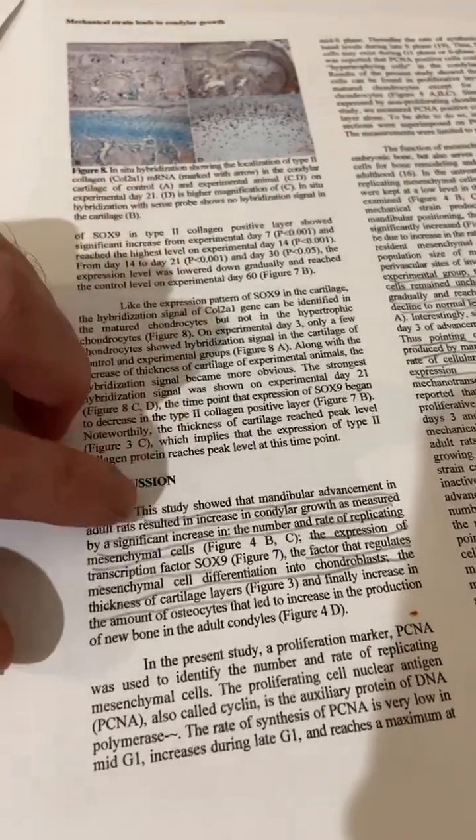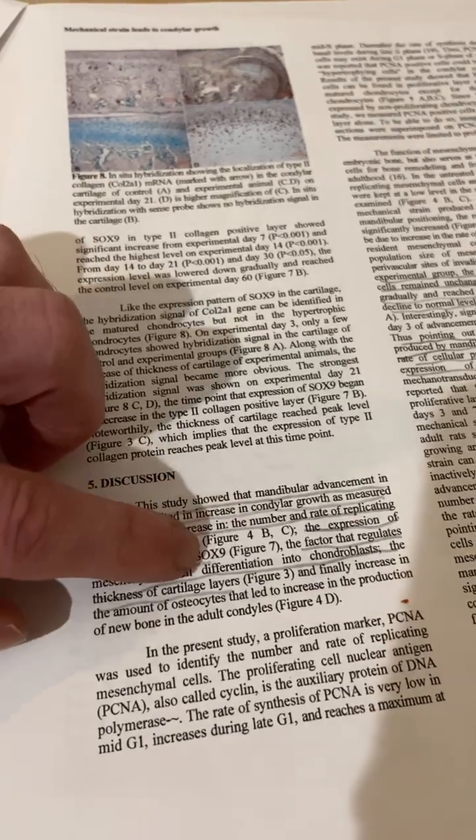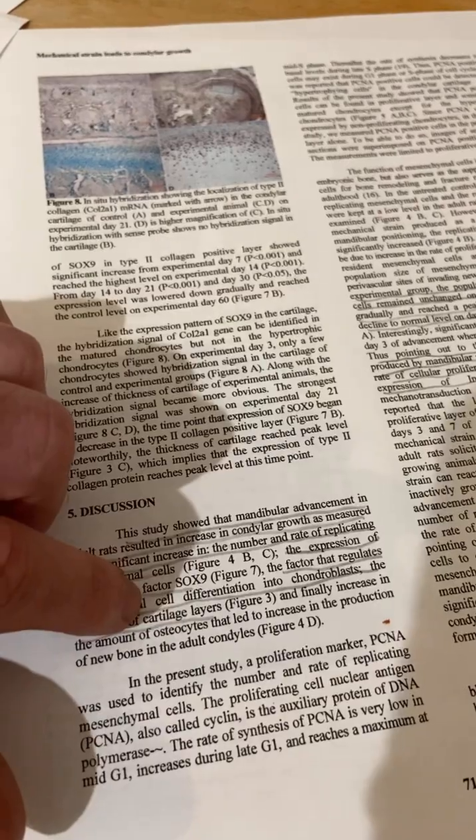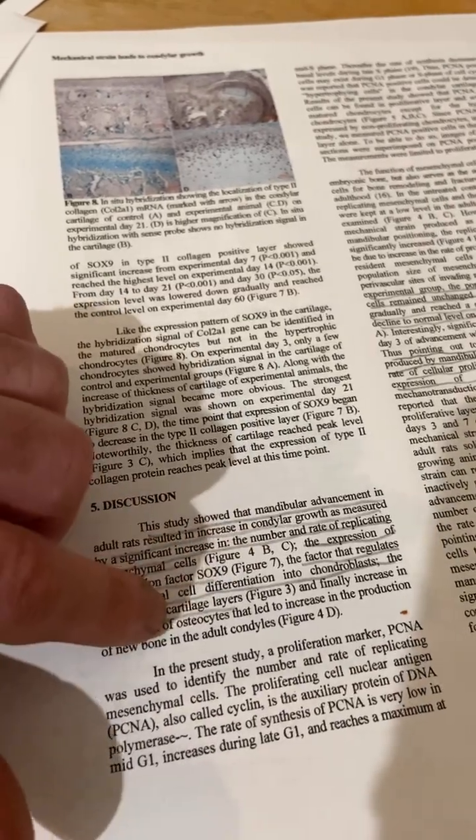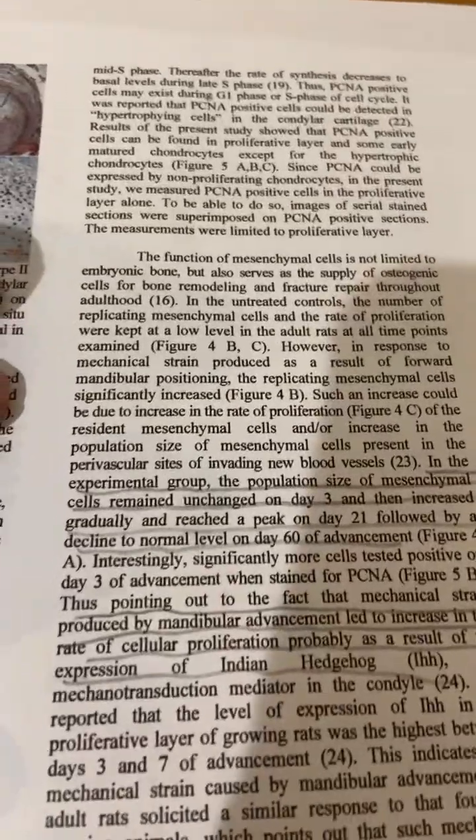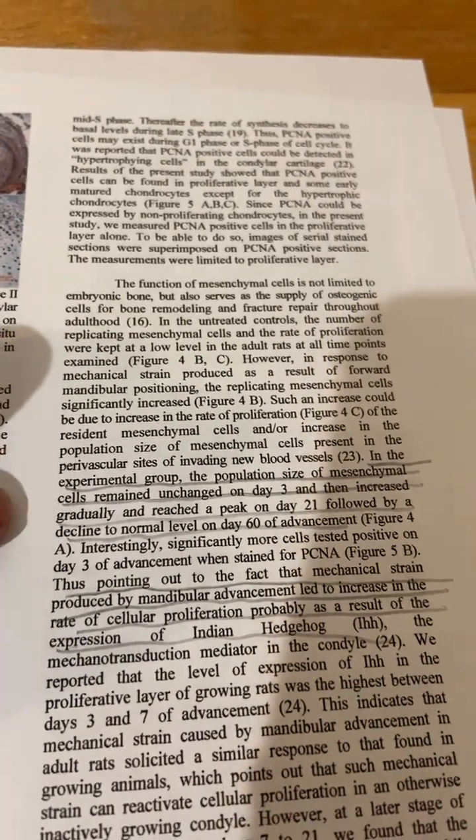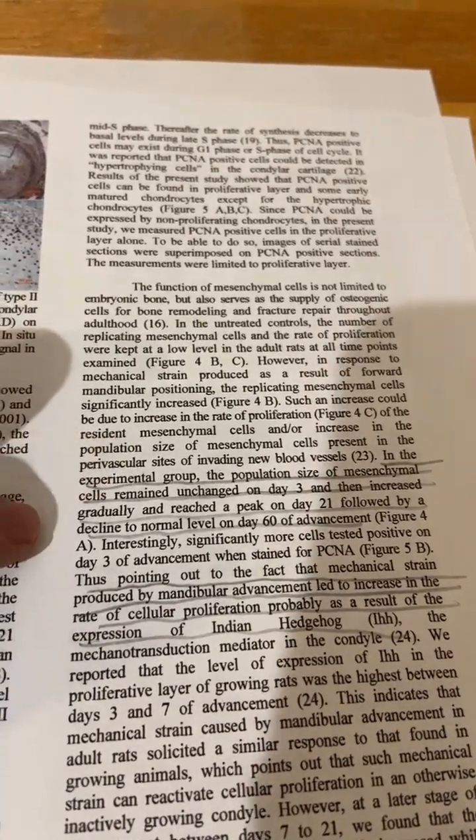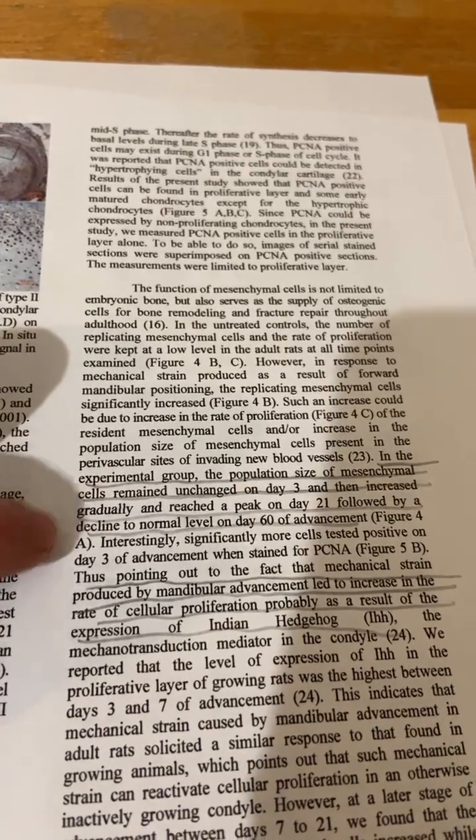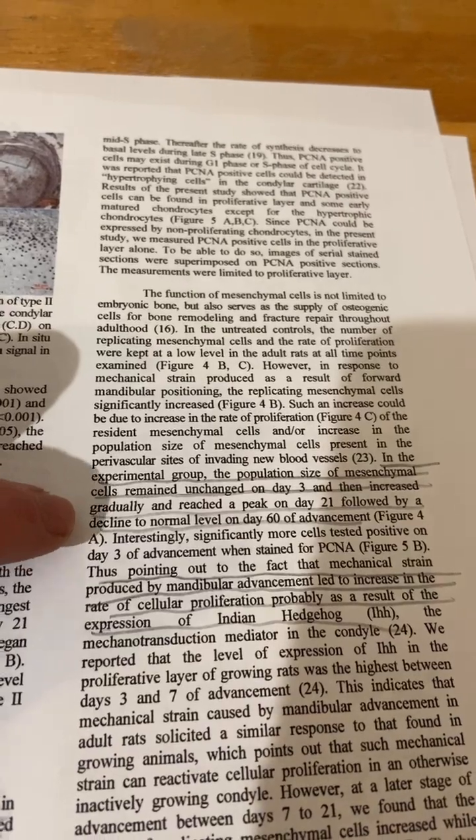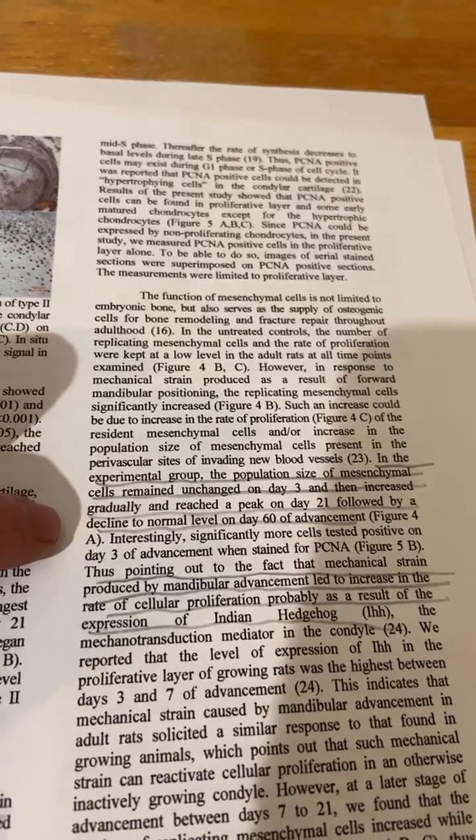The expression of transcription factor SOX9, the factor that regulates mesenchymal cell differentiation in the chondroblast thickness of cartilage layers. In the experimental group, the population size of mesenchymal cells remained unchanged on day three, and they increased gradually and reached a peak on day 21, followed by a decline to normal levels on day 60 of advancement.